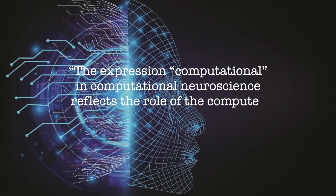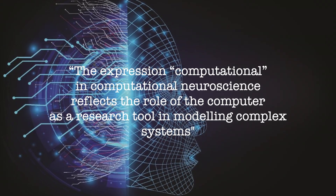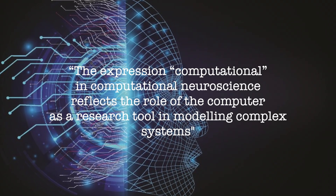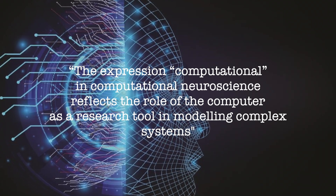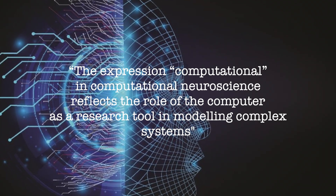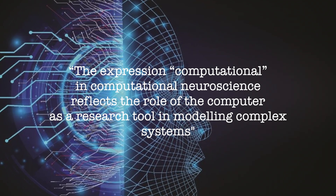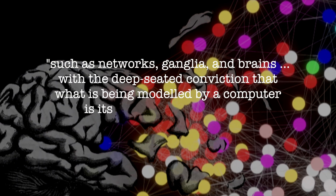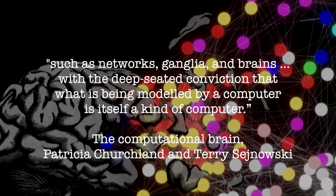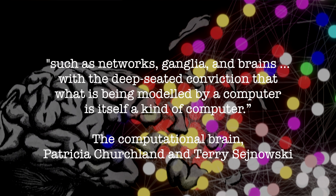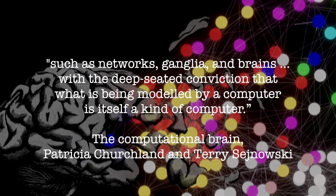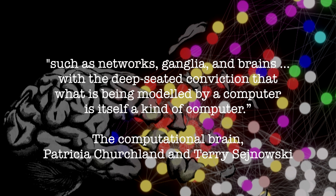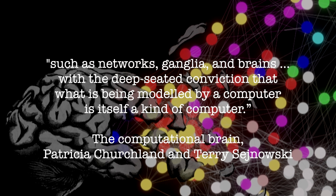In the book The Computational Brain, it is said that the expression 'computational' in computational neuroscience reflects the role of a computer as a research tool in modeling complex systems such as networks, ganglia and brains, with the deep-seated conviction that what is being modeled by a computer is in itself a kind of computer.